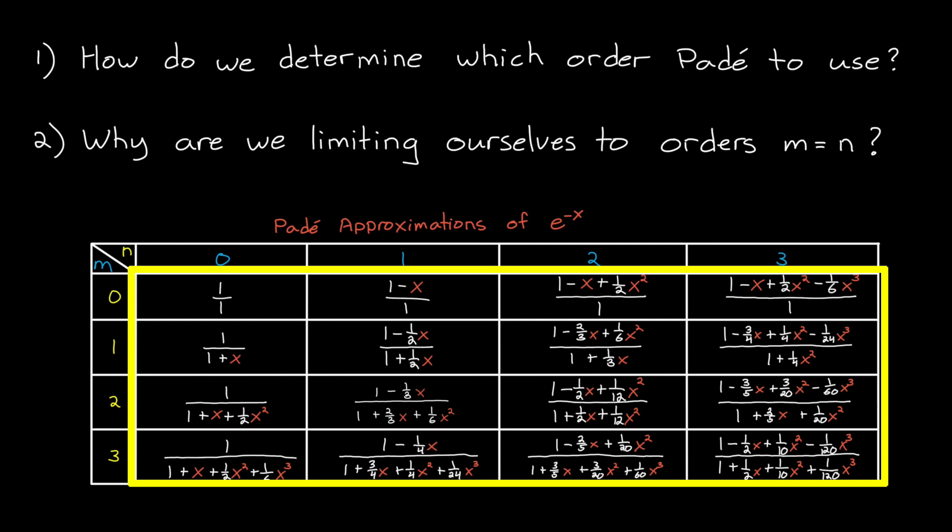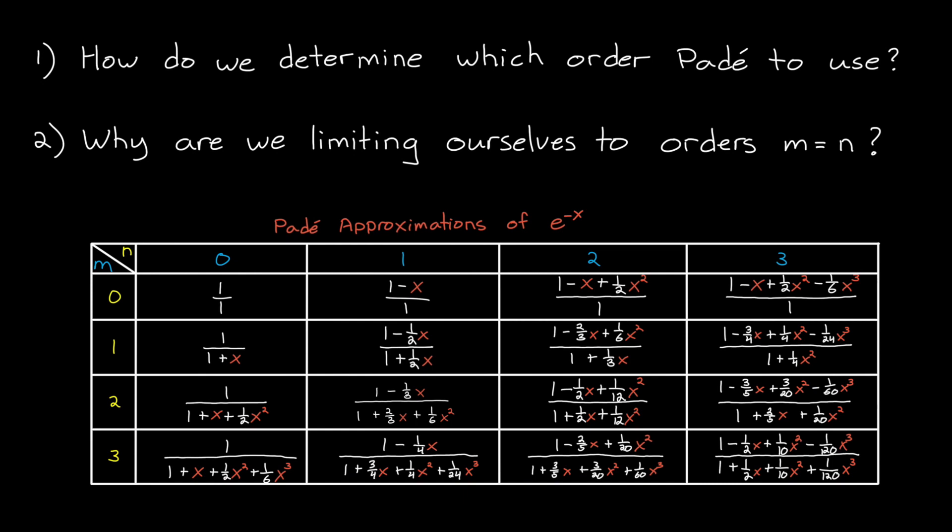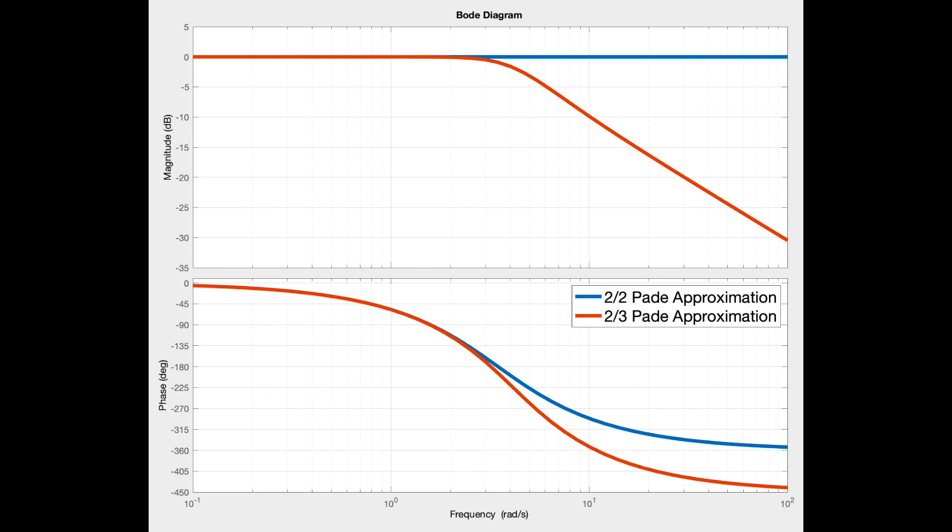Let's actually start with that question. Each of these are approximations of e to the negative x, and we could choose any of them to represent it. However, only the equal order Padé approximations, those are these along the diagonal, only these produce an approximation that affects only phase and not gain. They act like an all pass filter. Let me plot the two over two Padé approximation and compare it to the two over three approximation. Notice that with the two over two, the gain is zero decibels for all frequencies. It's just the phase that is affected by this system. Whereas with the two over three approximation, the gain starts to fall off at higher frequencies. And since a time delay doesn't affect gain in any way, it just delays the signal and therefore just the phase, this all pass type of filter is preferred.